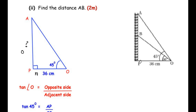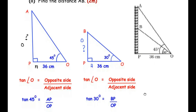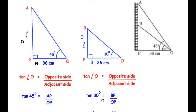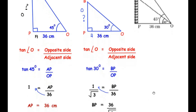Now let us focus on right-angled triangle BPO. We need to find height BP. The angle of elevation of point B from O is 30°, so BP is the opposite side, OB is the hypotenuse, and OP is the adjacent side. Using tan again: tan(30°) = BP/OP. The value of tan 30° is 1/√3, so 1/√3 = BP/36, giving BP = 36/√3.